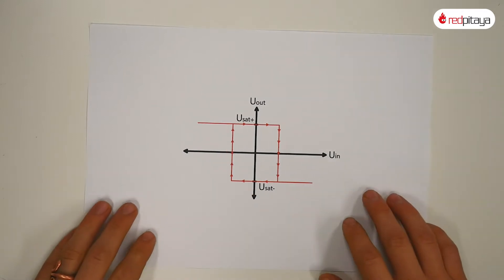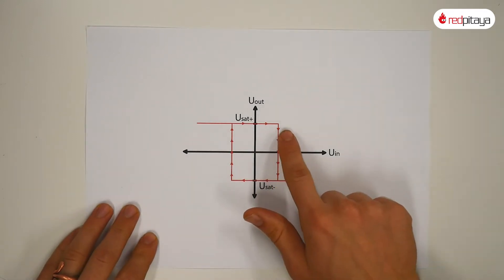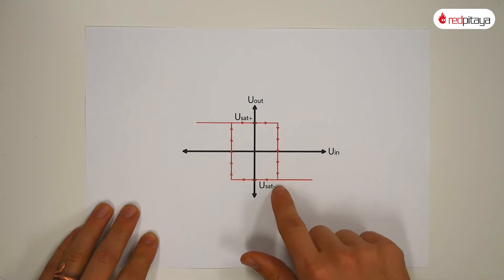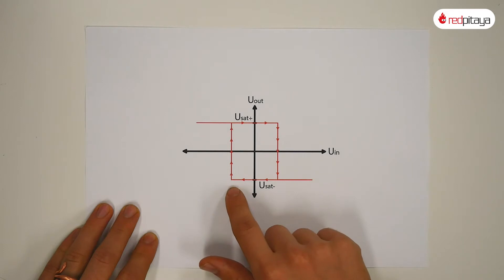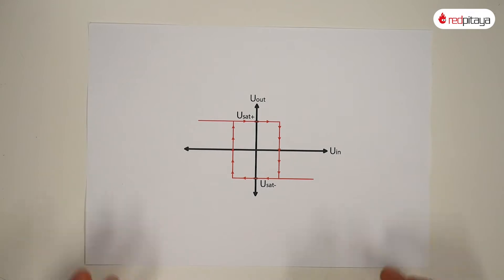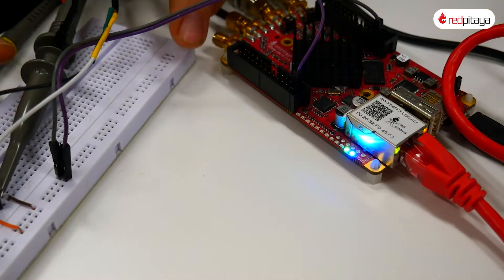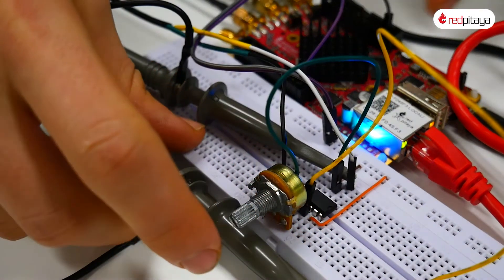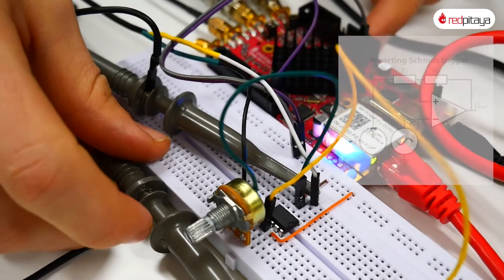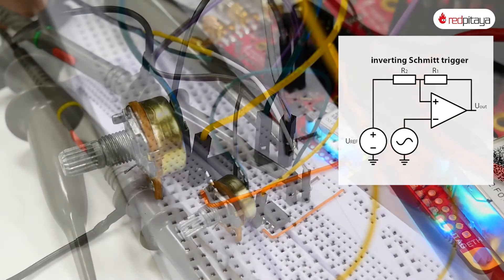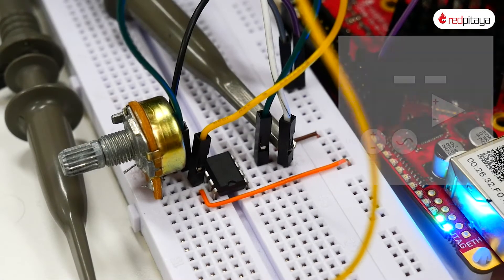The oscillator we've chosen for this video is based on an inverting Schmidt trigger. In case you have forgotten: when input goes above upper threshold voltage, output goes low. It won't go high until input falls below the negative threshold voltage. Here is the circuit, same as the one we built in the previous video. It behaves exactly the same as the last time.